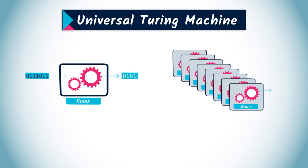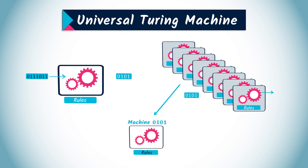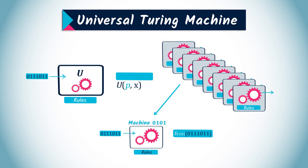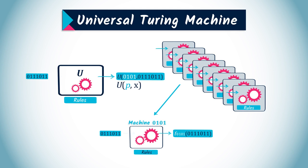The first argument specifies which Turing machine will be emulated. The second argument specifies the input. We write u of p x, where p is a code specifying the Turing machine to emulate, and x is the input of that machine.